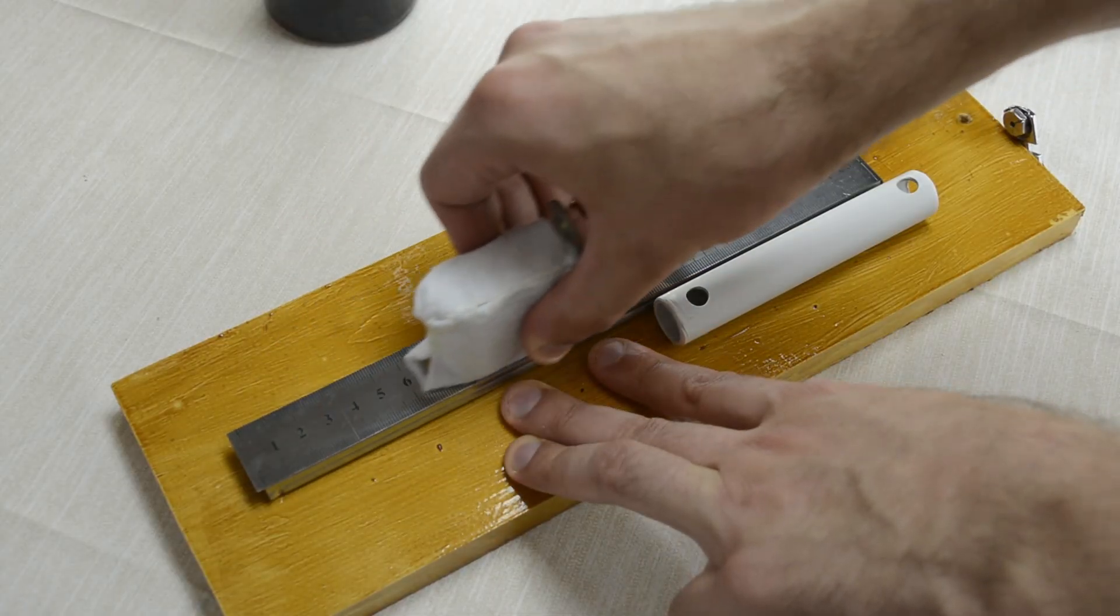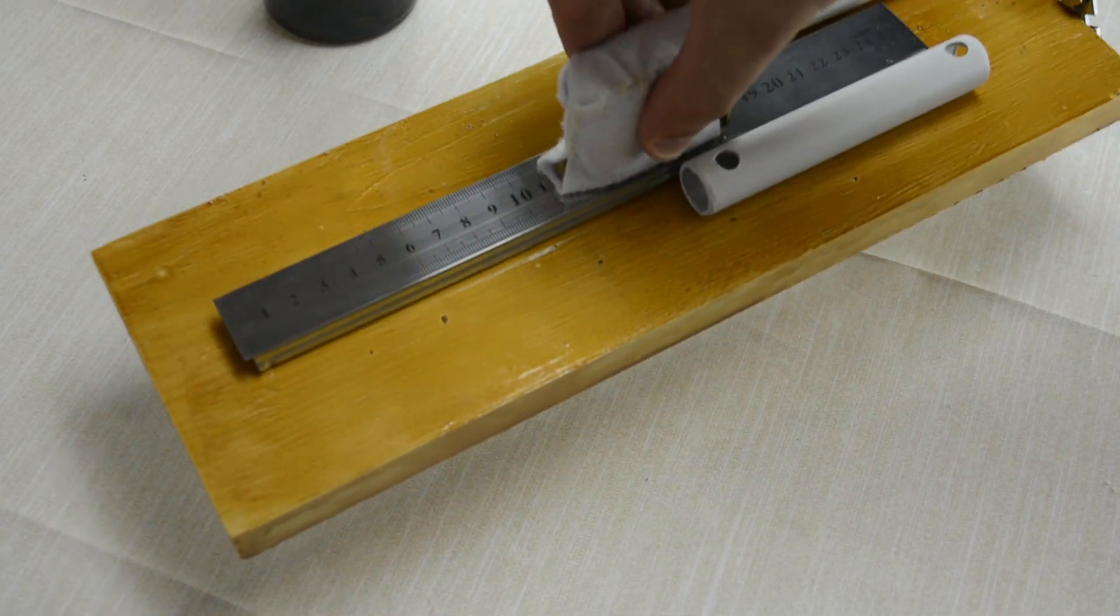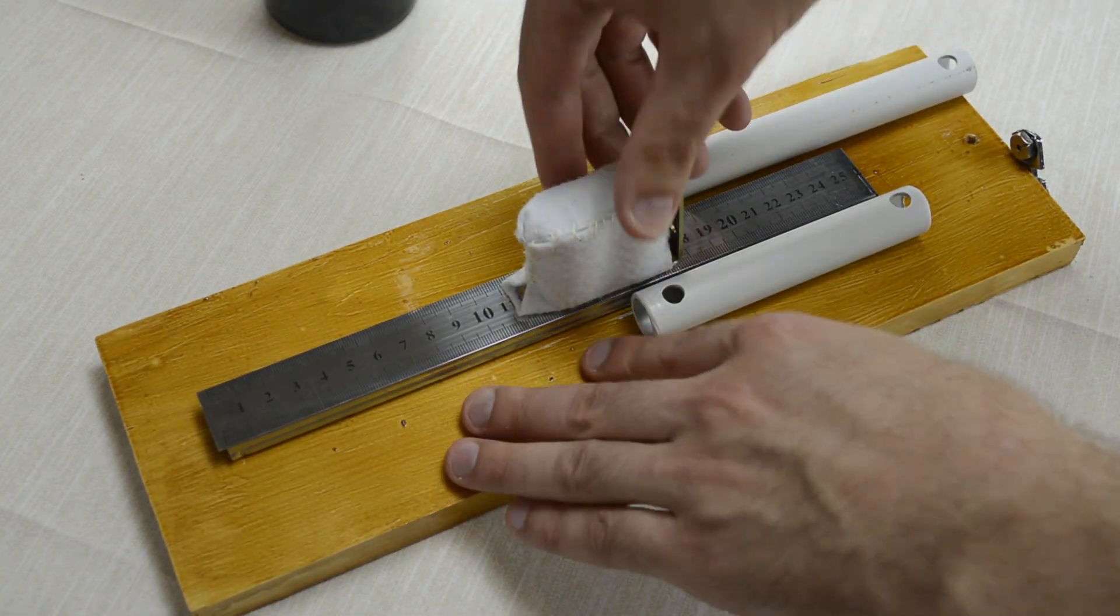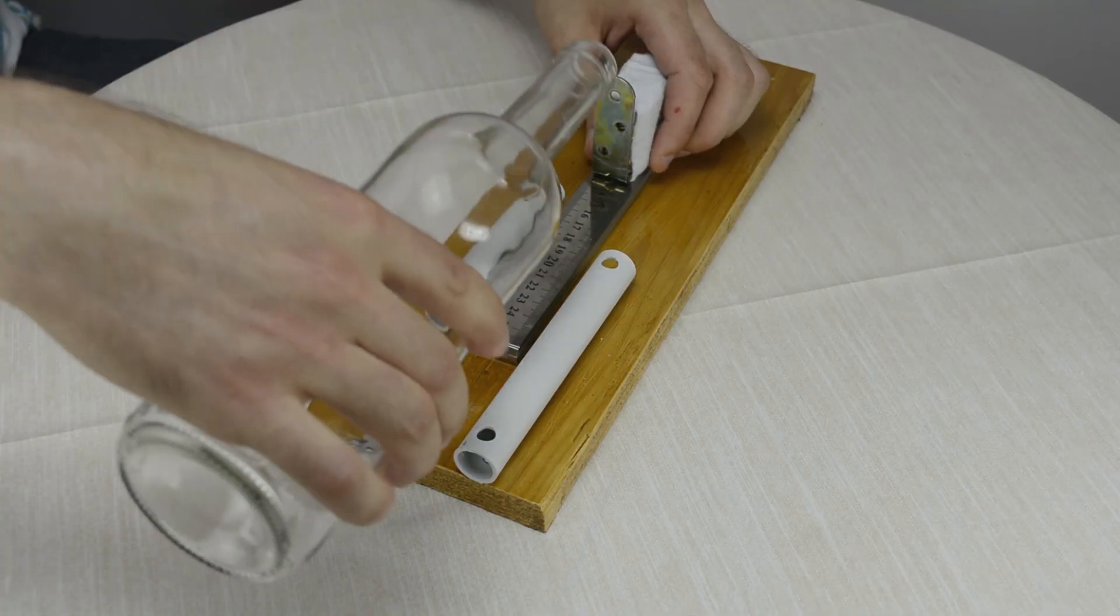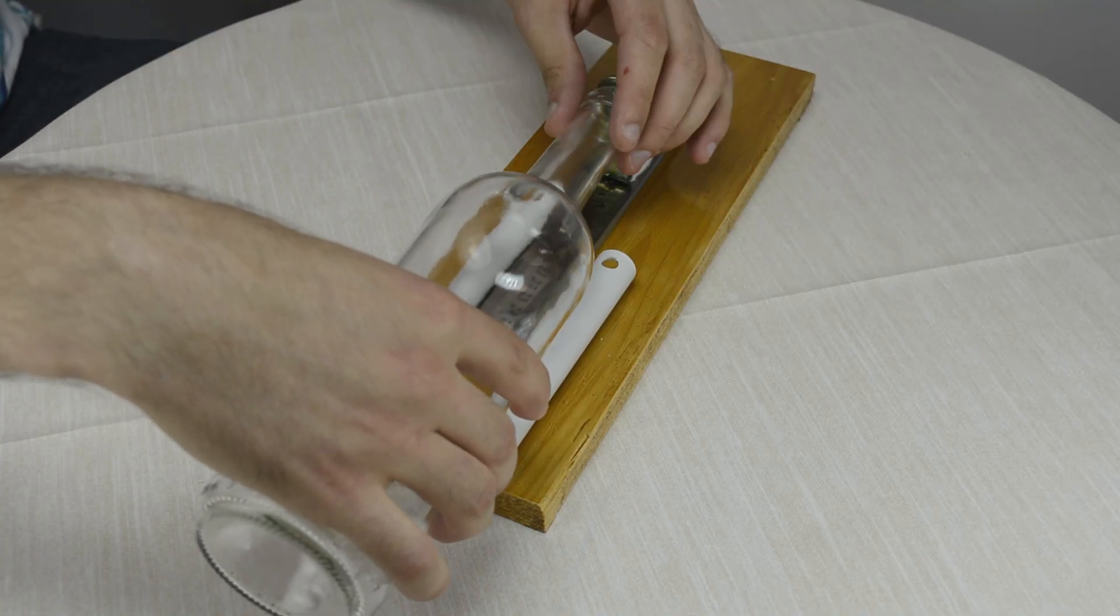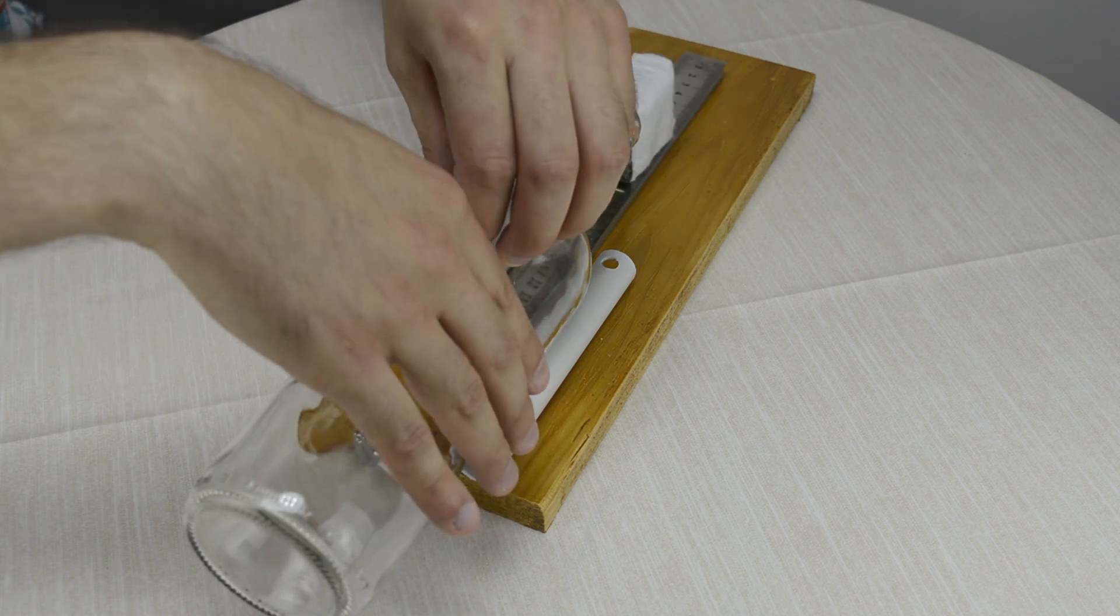Well, that's it. Now you have a bottle cutter with a ruler. You can put the bottle any way you want. Adjust the bracket and carefully score the line.